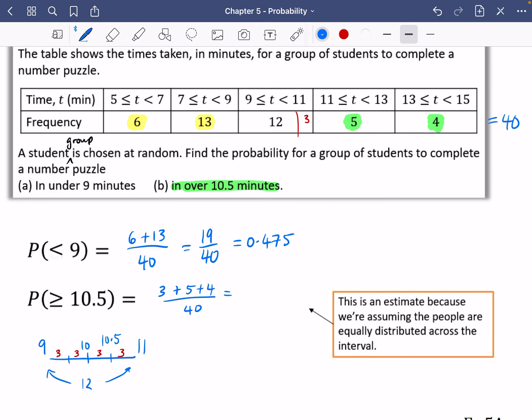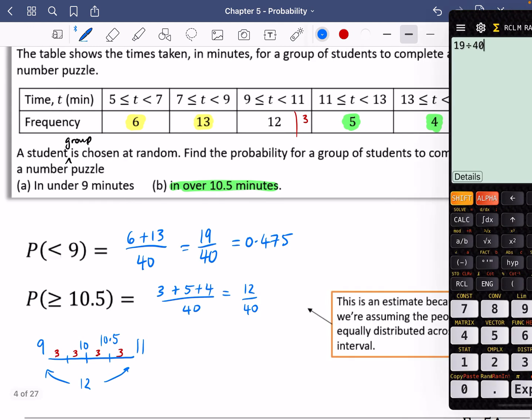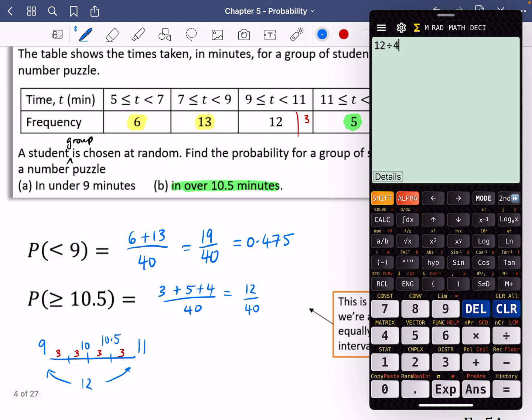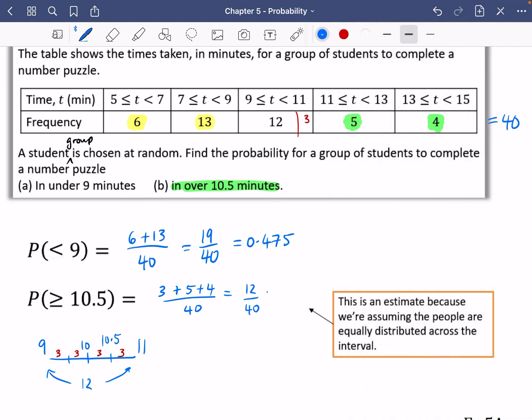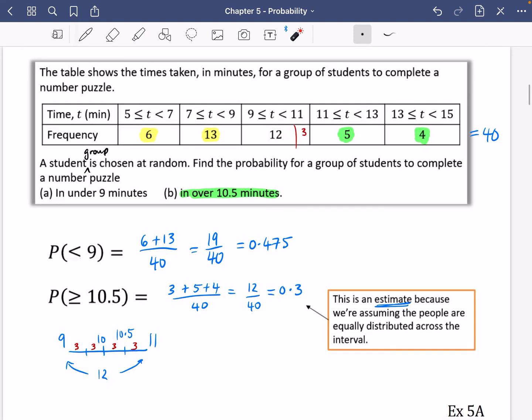When I have this together, we've got three from that group from our estimate, plus five, plus four, and that's still going to be out of 40. That is five plus four, that's nine, 10, 11, 12 out of 40. Let's get that one as a decimal as well. 12 out of 40 is 0.3. I want to stress this is an estimate because we're assuming that the people are equally distributed across this interval. But it's very possible that these 12 groups may have all done it in nine minutes and 10 seconds. We don't know, so we're just making an assumption that they are equally distributed.